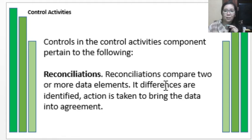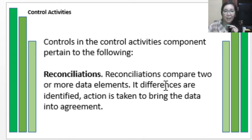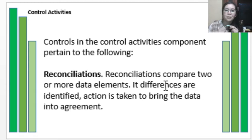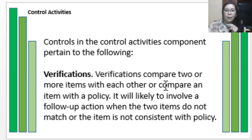Another control under control activities is reconciliation. Reconciliations compare two or more data elements. If differences are identified, actions will be taken to bring the data into agreement. The purpose of reconciliation is to determine if there are deviations or differences, understand the reasons for them, and take corrective action.